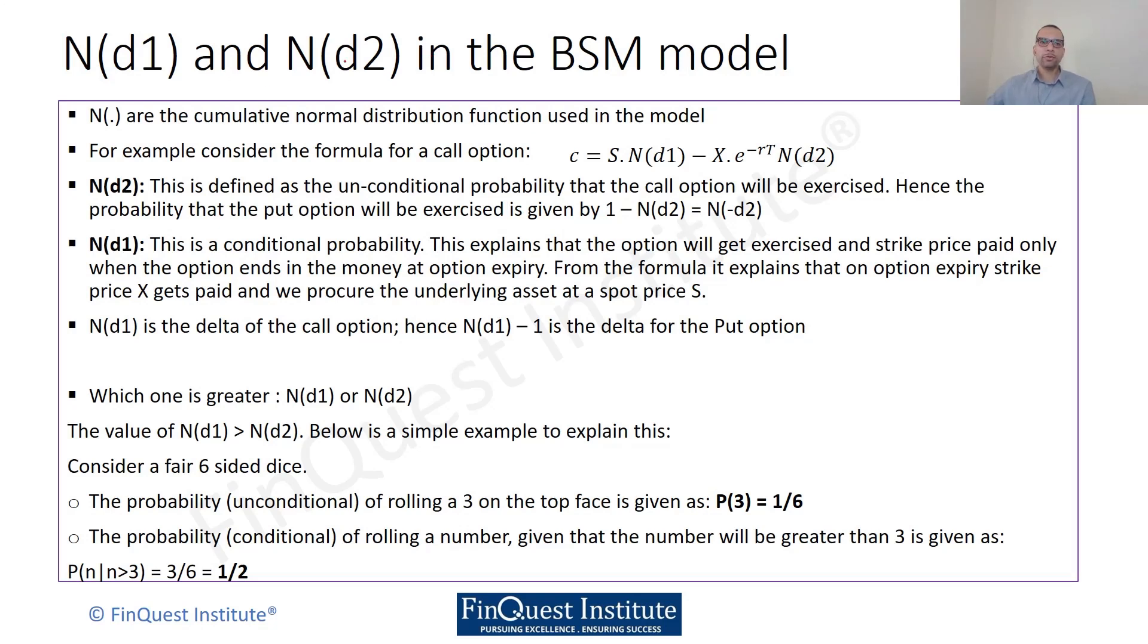Understanding N(d1) and N(d2) is a very popular question, not just on examinations but also for job interviews. N(d1) and N(d2) are two quantities which feature mainly as part of the Black-Scholes model. They are central parts of the formula. We know that N() is the cumulative normal distribution which we discussed earlier.